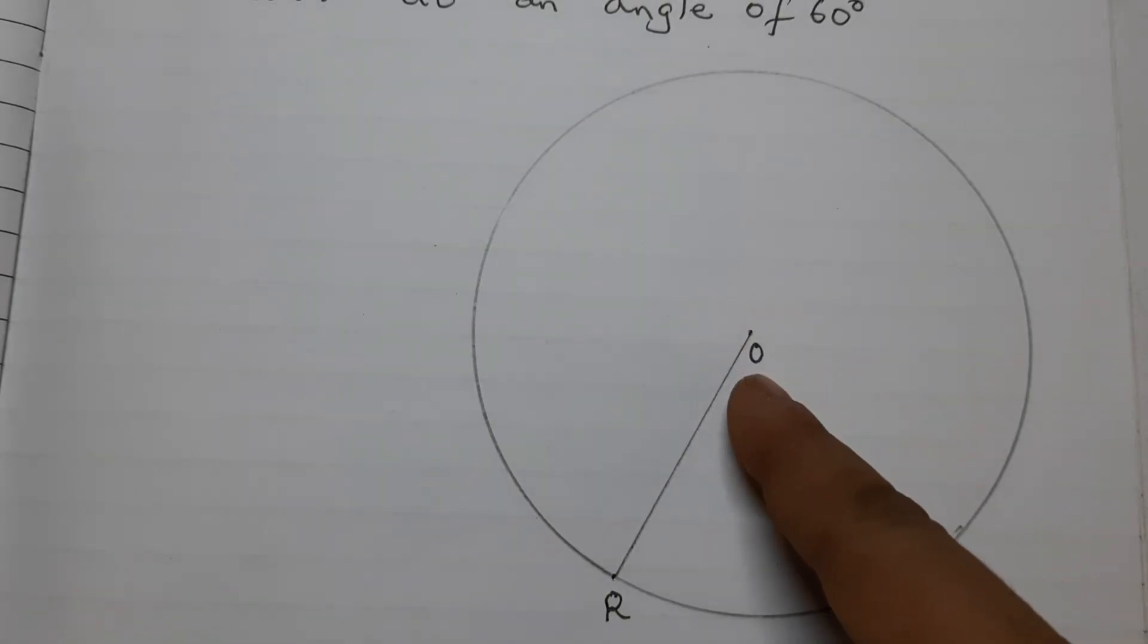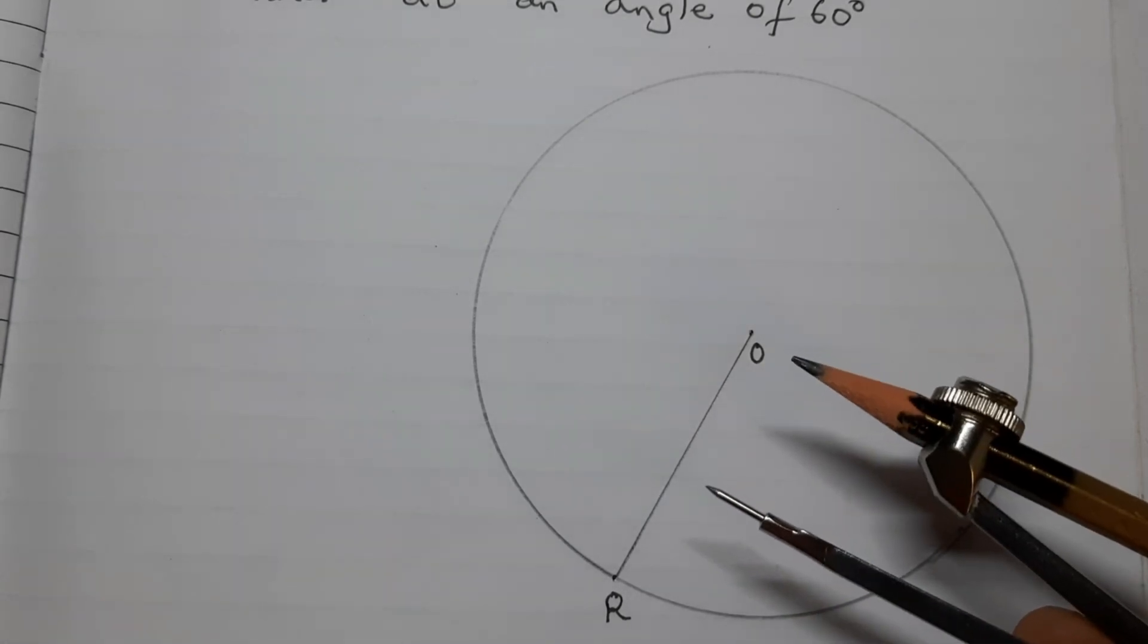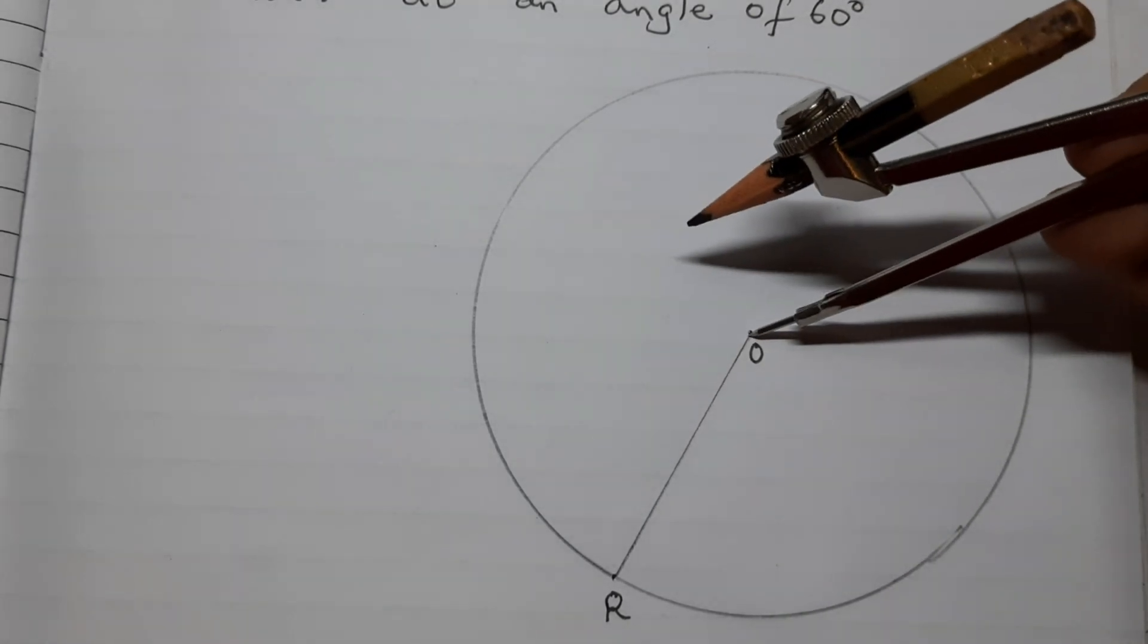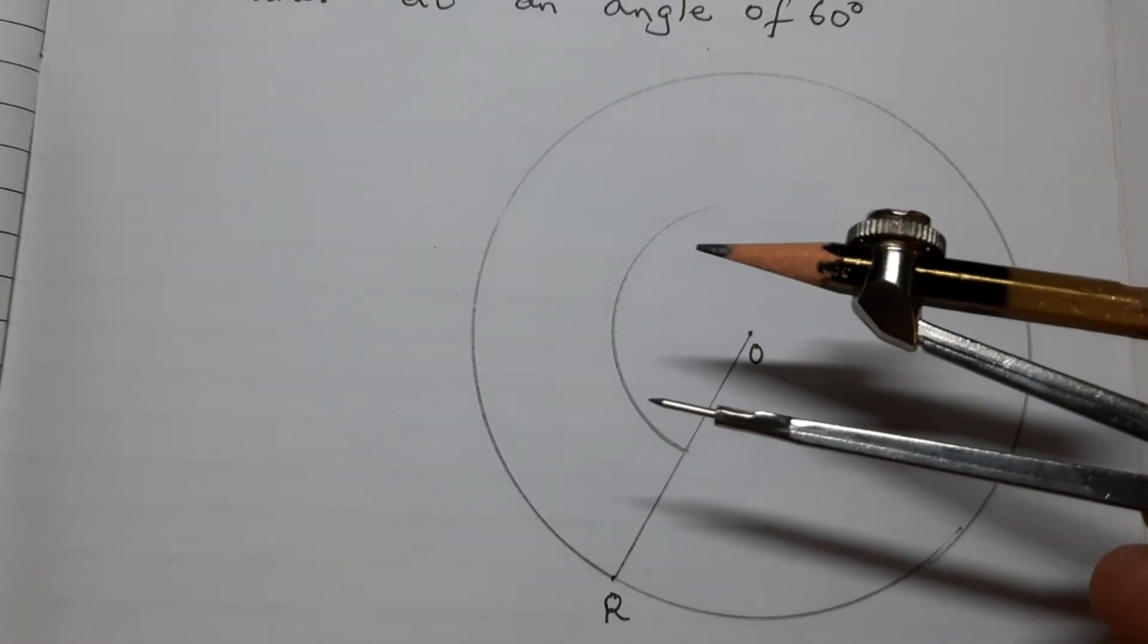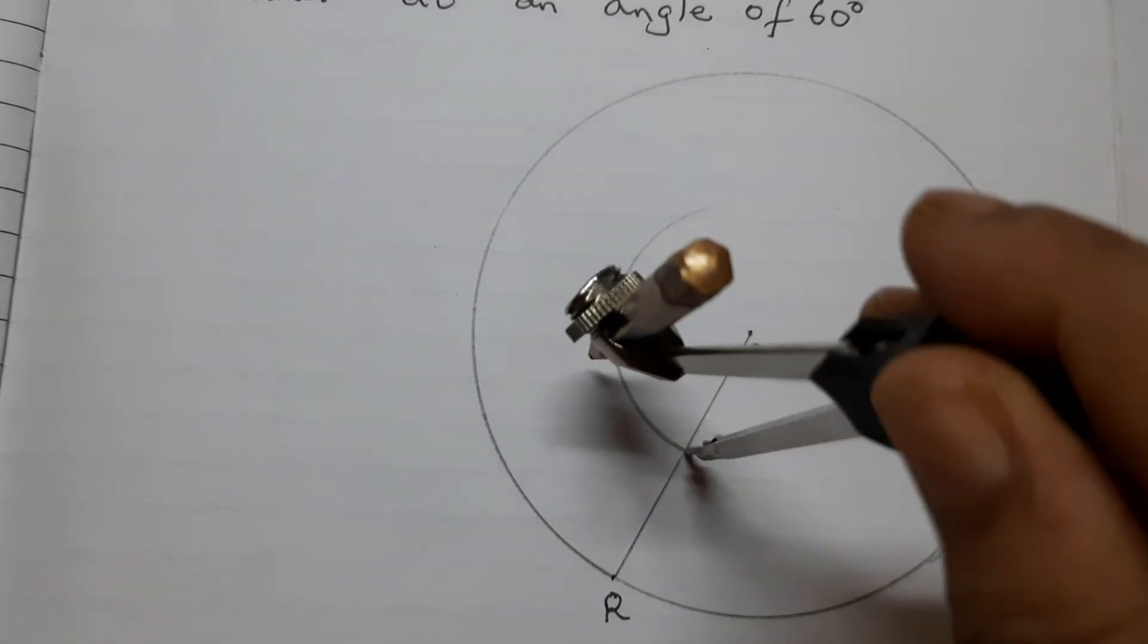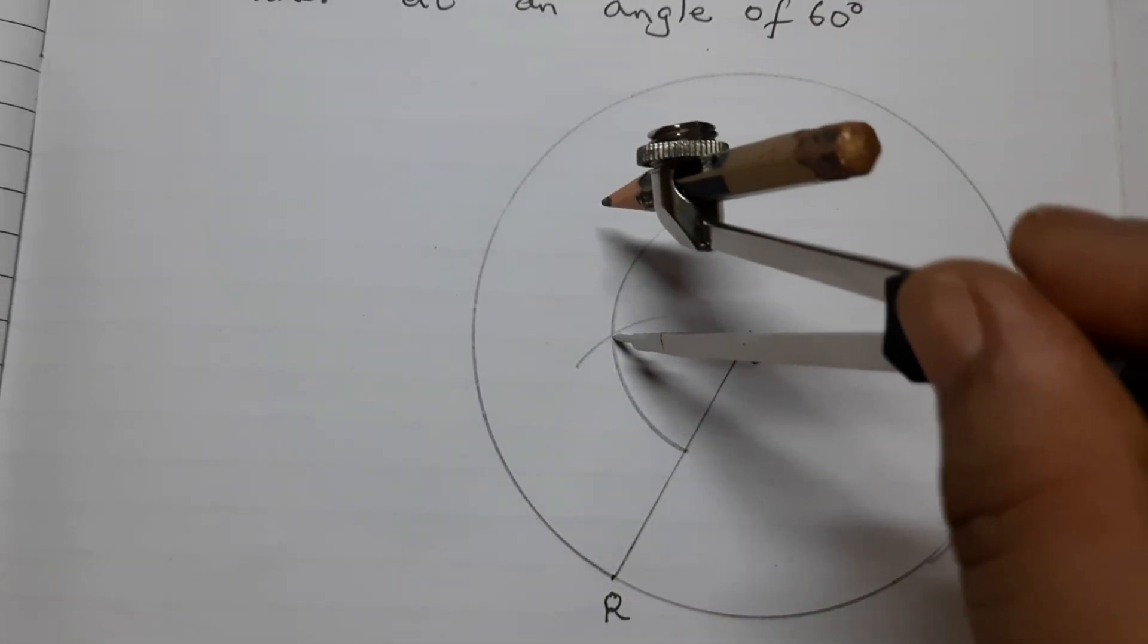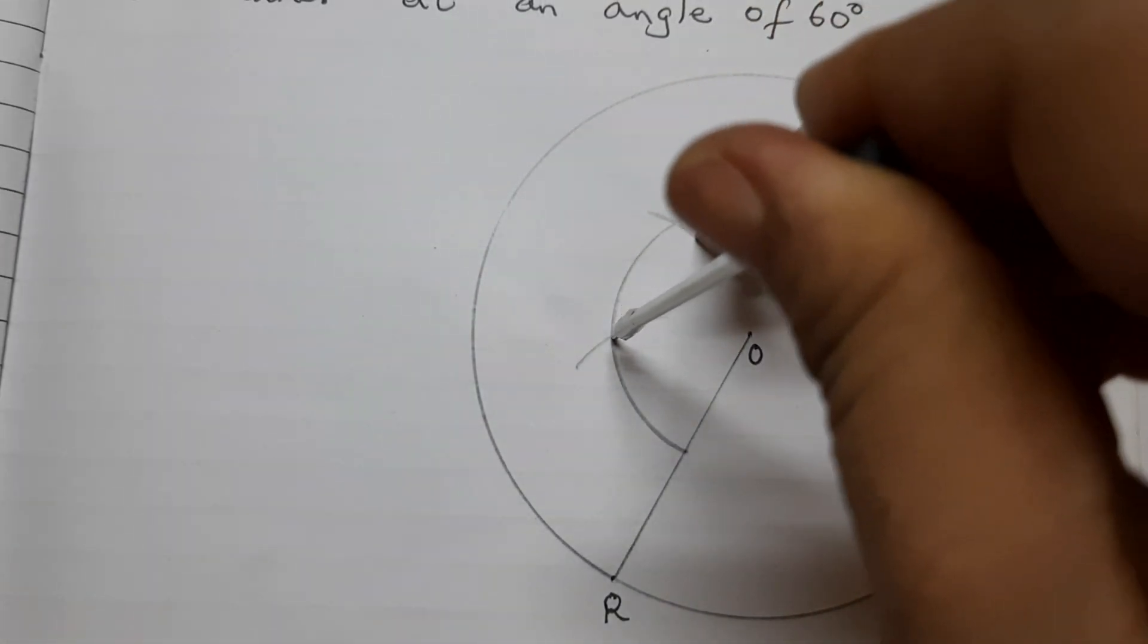Construct an angle of 120 degrees at O. For that, take a compass and any radius. Draw an arc with the same radius. Keep the pointer here and cut two arcs. First arc is for 60 degrees. Second arc is for 120 degrees.